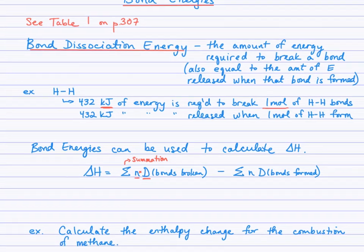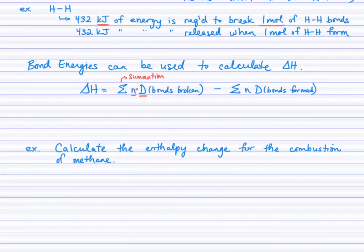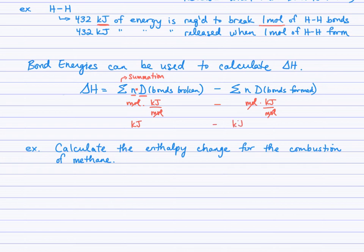Then we subtract the same calculation, but for all the bonds that are being formed. Regarding units: N is measured in moles, and bond dissociation energy is measured in kilojoules per mole. When we multiply those, moles cancel, leaving us with kilojoules. We do that for bonds broken, then subtract kilojoules for bonds formed, ending up with units of kilojoules — which is what delta H, the enthalpy change, should be measured in.